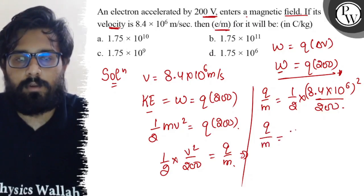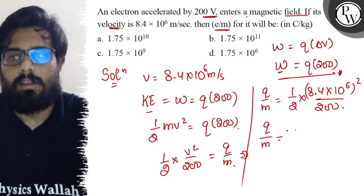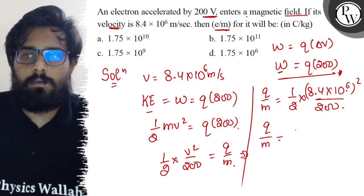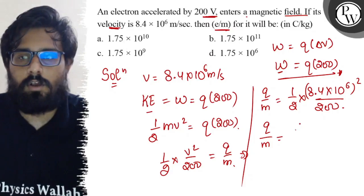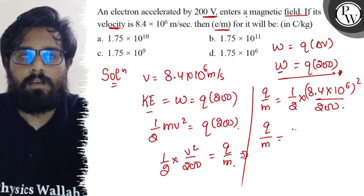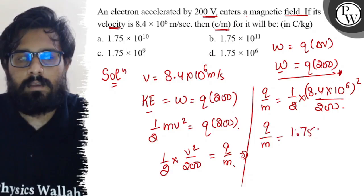So once you solve this part, the value of q/m which comes out to be approximately 8.4 × 8.4 × 10¹², which is 10¹² divided by 400.